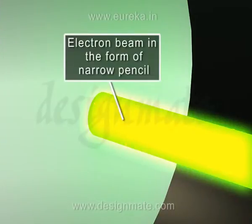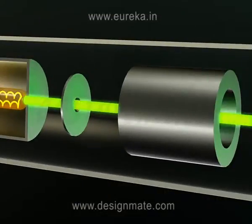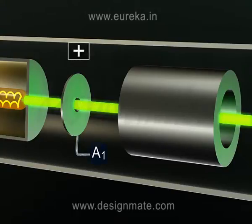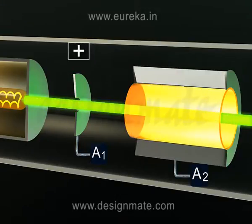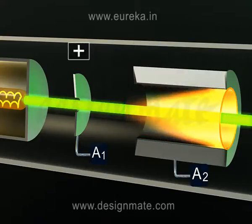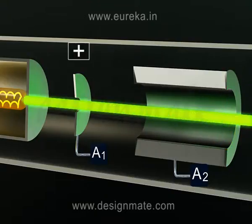Electrons come out in the form of a fine, narrow pencil. This electron beam is then accelerated by means of anode A1, in the form of a plate with a central hole. Another cylindrical anode A2 is kept to focus the beam further, and is maintained at a lower potential than that of anode A1.